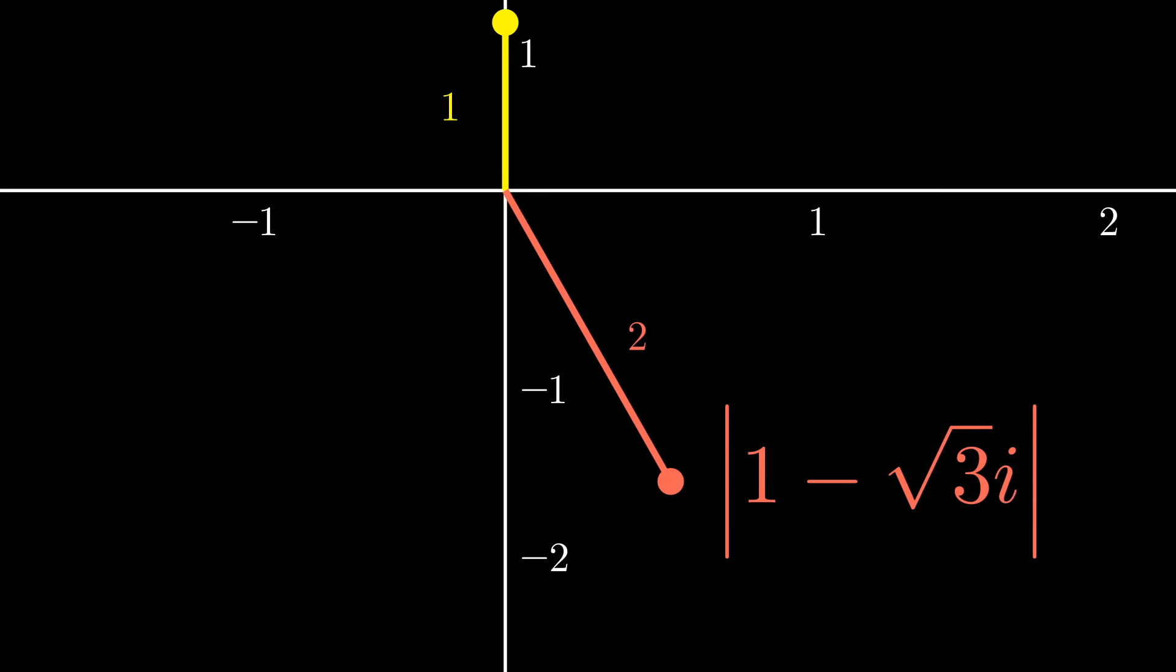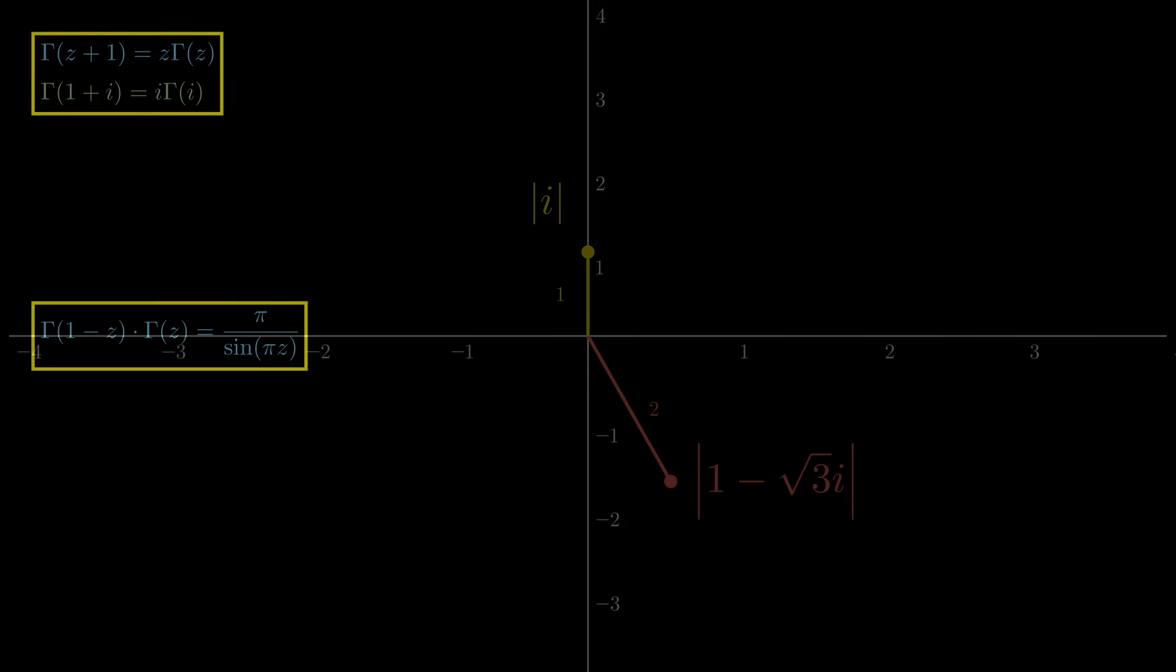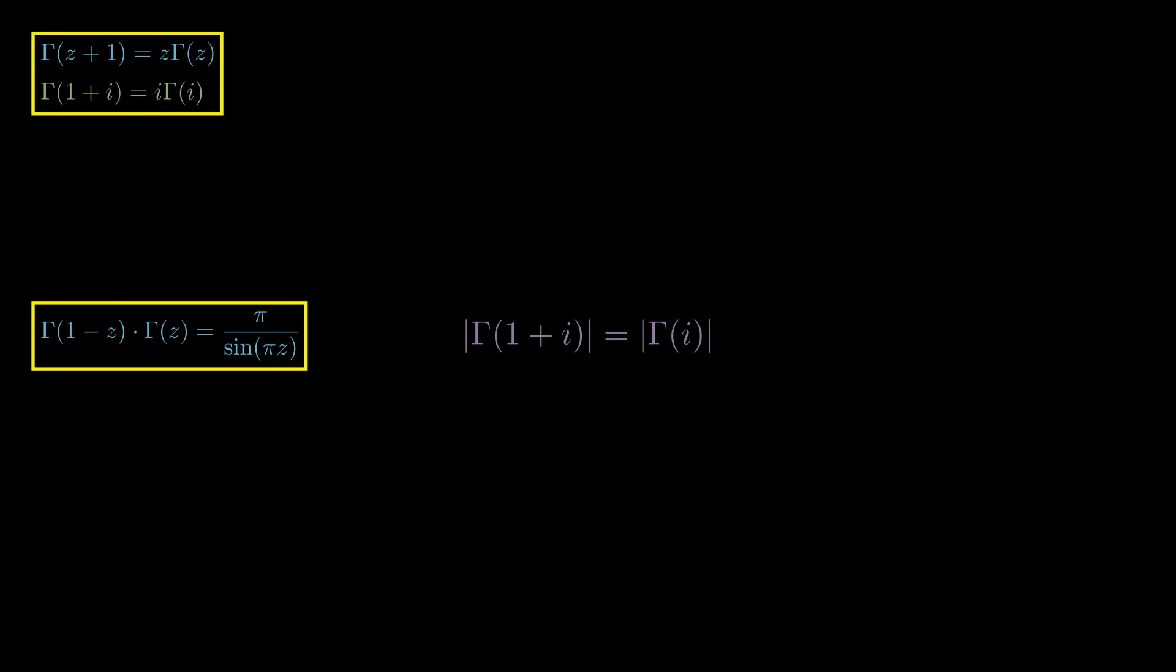What makes this especially interesting with our gamma function? Since gamma of 1 plus i is the same as i times gamma of i, they have the same absolute value. The absolute value of gamma of 1 plus i is the same as the absolute value of i times the absolute value of gamma of i, and we just saw the absolute value of i is 1. Thus, gamma of 1 plus i and gamma of i have the same absolute value. This is going to be very important for our calculation a little bit later.